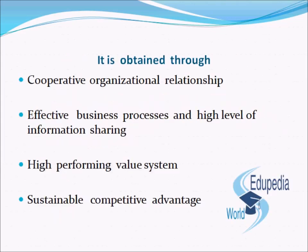Let's look at the points through which a stable and prominent supply chain relationship is obtained. It is obtained through cooperative organizational relationships, effective business processes, a higher level of information sharing, a high-performing value system, and sustainable competitive advantage. Sustainable competitive advantage benefits various organizations, while a high-performing value system is required for establishing an appropriate value system.